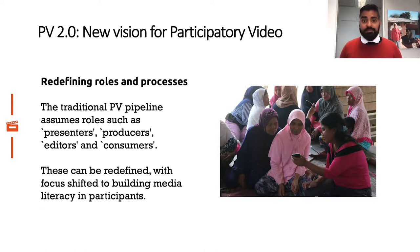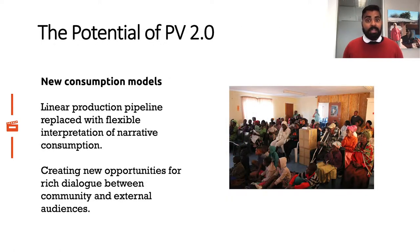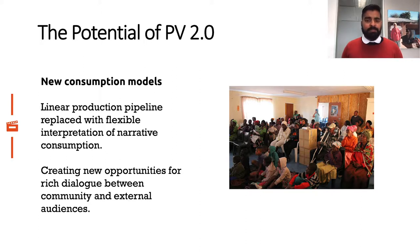Redefining the PV process in terms of reconfigurable objects forces further reflection on the role of editorial and post-production processes normally associated with PV, thus opening new opportunities. In PV 2.0, the reliance on a linear production pipeline is replaced with a flexible interpretation of narrative consumption. This allows communities to produce content that can be consumed by multiple stakeholders — for example, through an interactive documentary format — while maintaining editorial and narrative control. However, mechanisms for facilitating such new narrative formats do not yet exist, and processes will need to support co-production and continual feedback loops between facilitators, community, and audience.